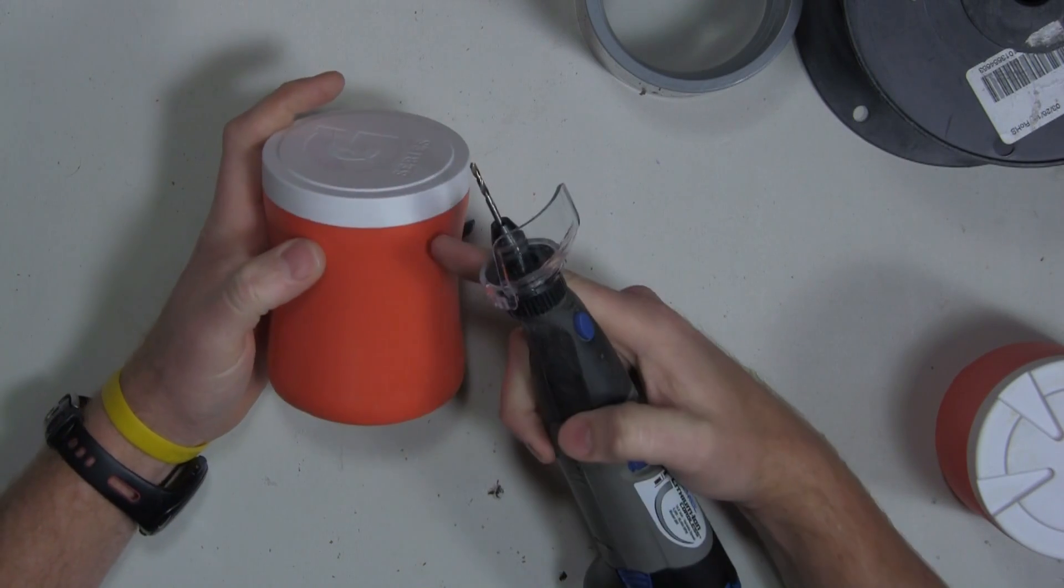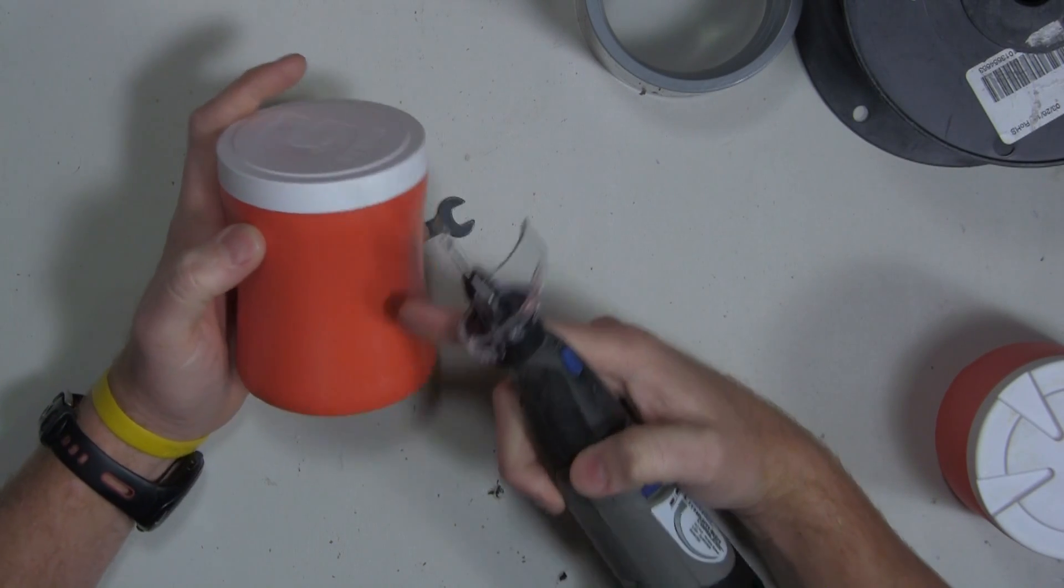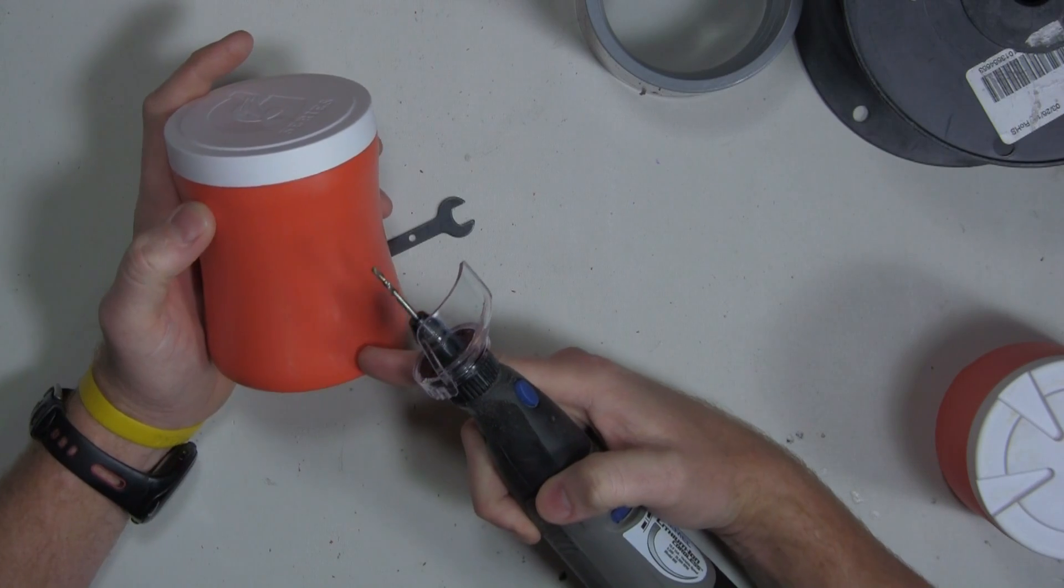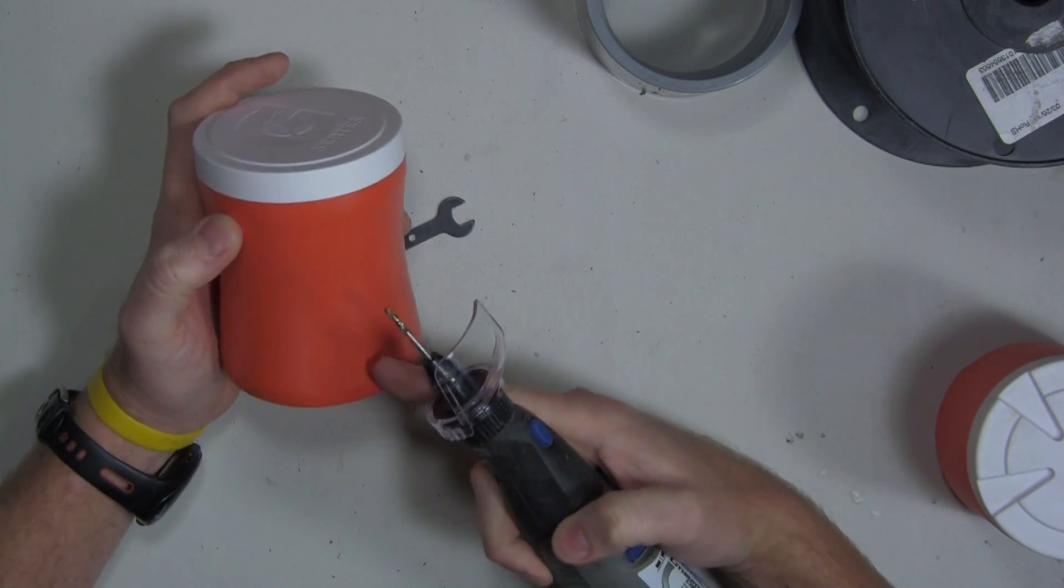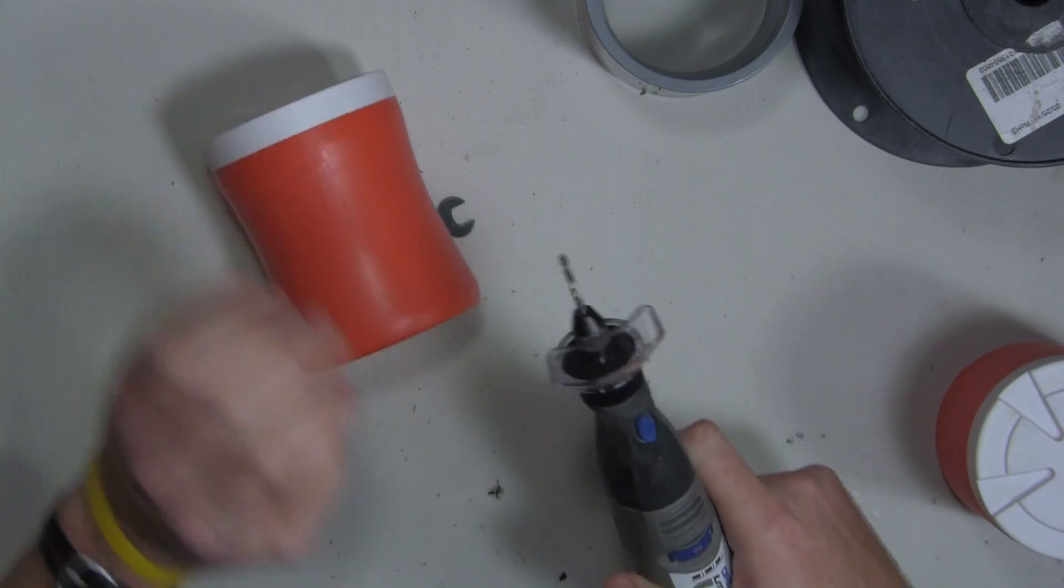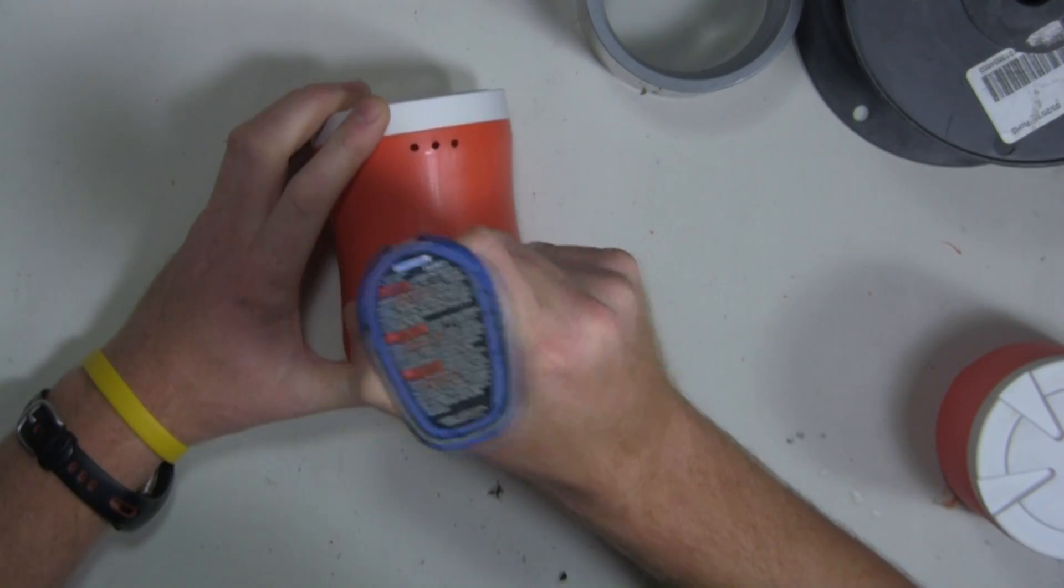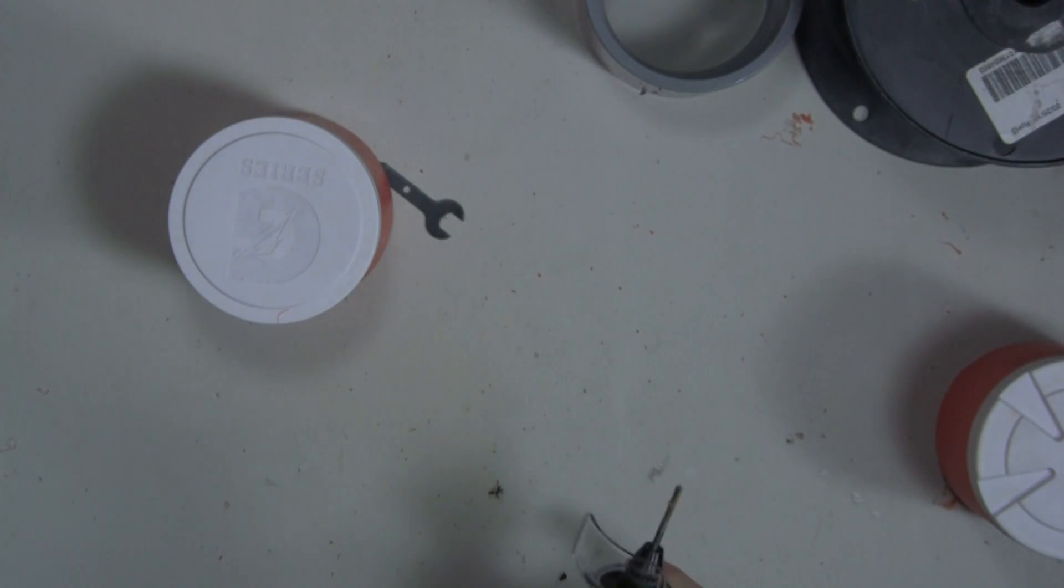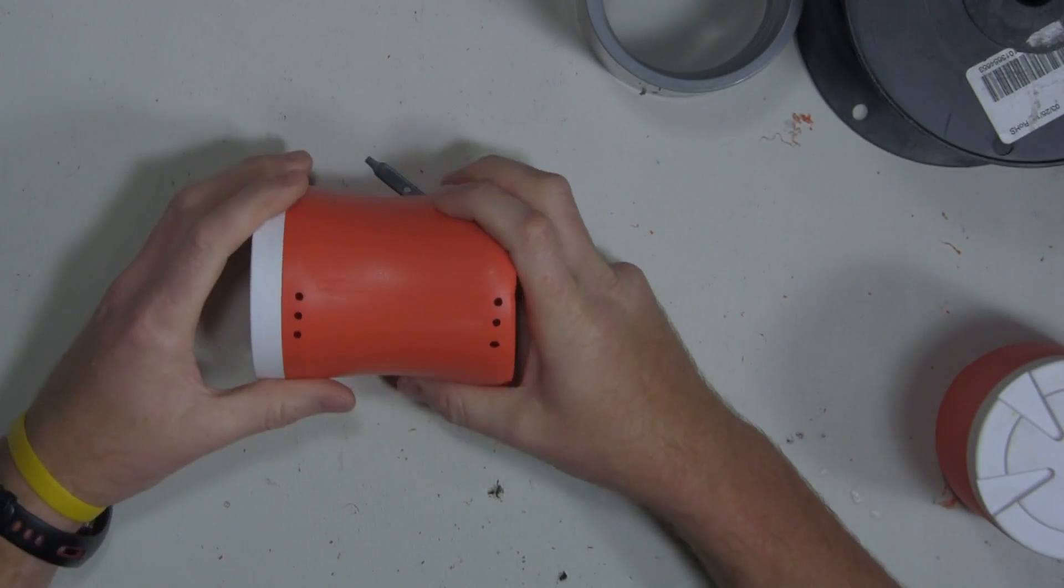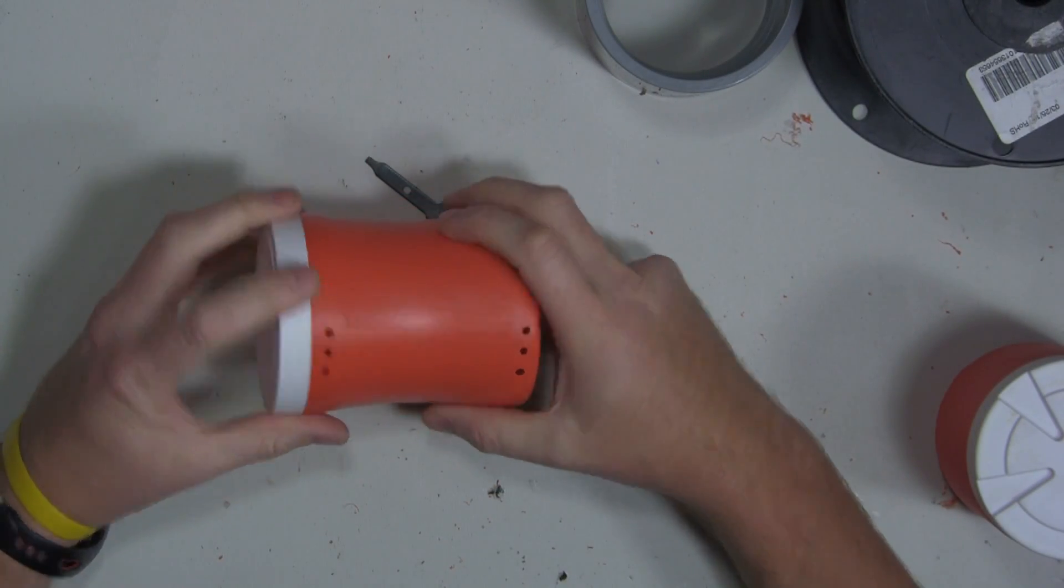I'm going to drill three holes at the top and three holes at the bottom all in line with each other. I'll show you why here in a second. Alright, so I've got three holes kind of in line with each other.